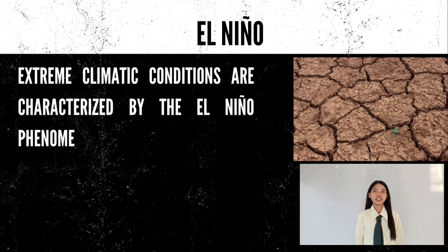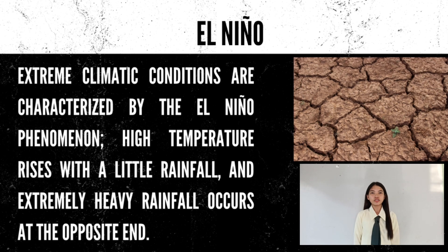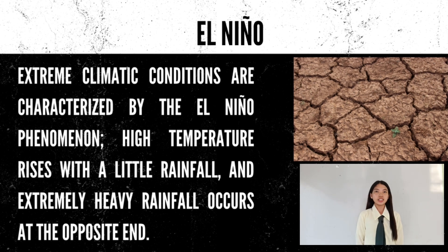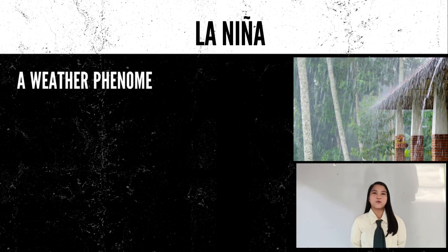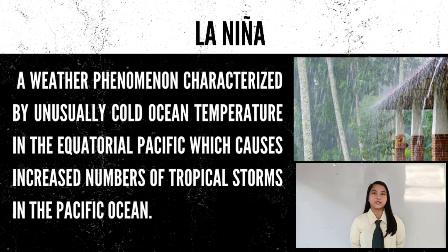El Niño is a climate phenomenon characterized by the warming of sea surface temperatures in the Central and Eastern Pacific Ocean, leading to global weather pattern disruptions that can impact rainfall, wind patterns, and temperature distribution worldwide. La Niña is a weather phenomenon characterized by unusually cold ocean temperatures in the equatorial Pacific, which causes increased numbers of tropical storms in the Pacific Ocean.